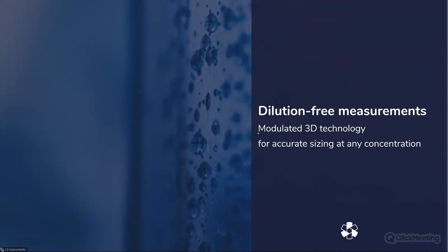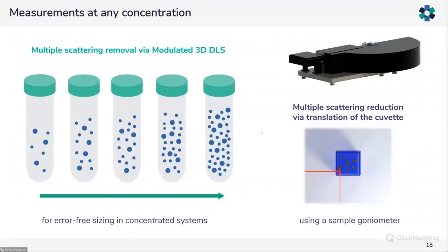When it comes to the power of the LS Spectrometer, the ability to conduct dilution-free measurements is central. The modulated 3D technology performs accurate sizing at any measurable concentration — this has been the flagship of LS Instruments since the company's creation. Whether looking at highly diluted or highly concentrated samples, we want to investigate these systems accurately. However, with highly concentrated systems, multiple light scattering arises in the signal, and multiple scattering generates errors in the results.